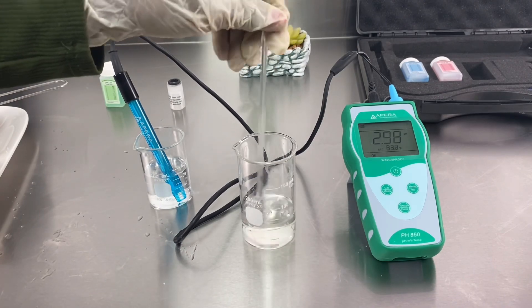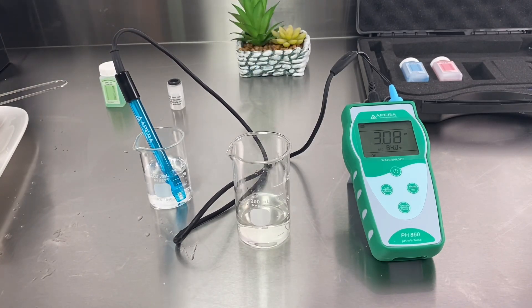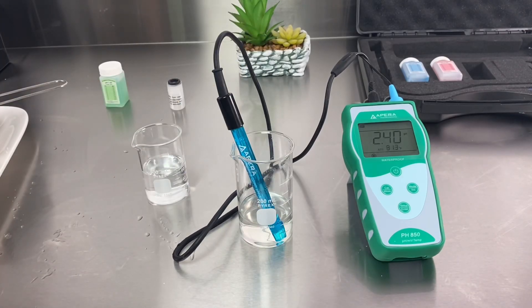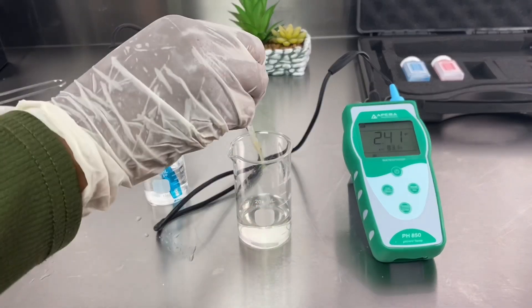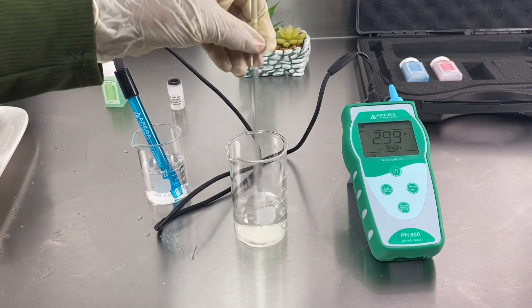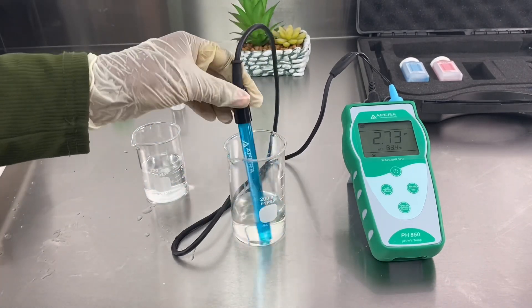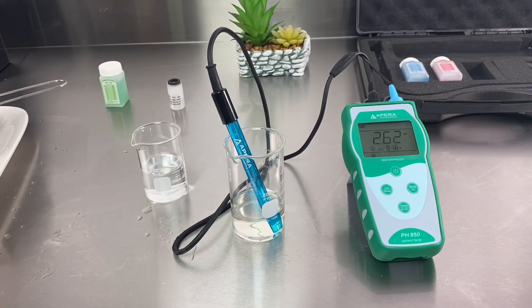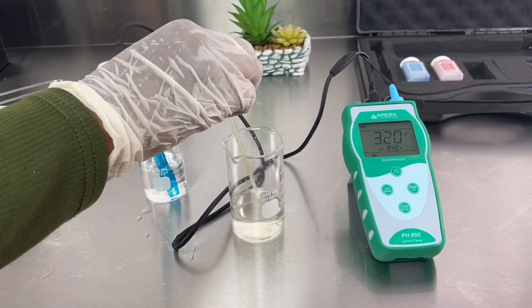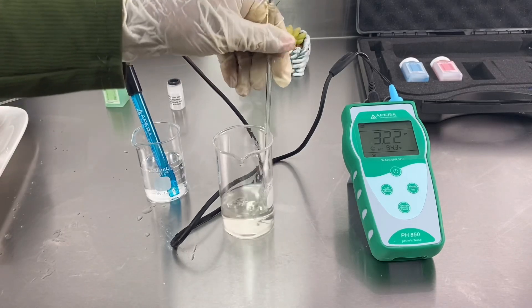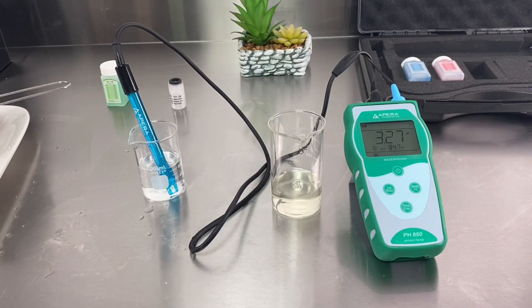This serum doesn't contain preservative because this particular powder you can't add preservative to. So what you do is store it in the fridge. When you finish using it, put it in the fridge. This serum can last you one week or two weeks. If you see the color has changed, you need to throw it away and make a new one.